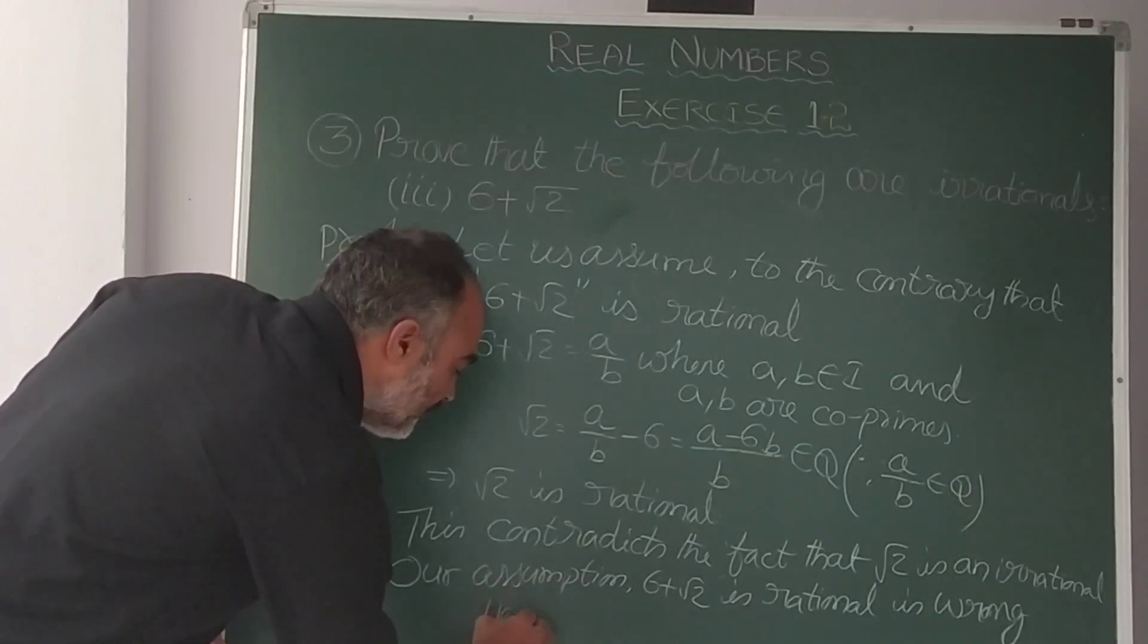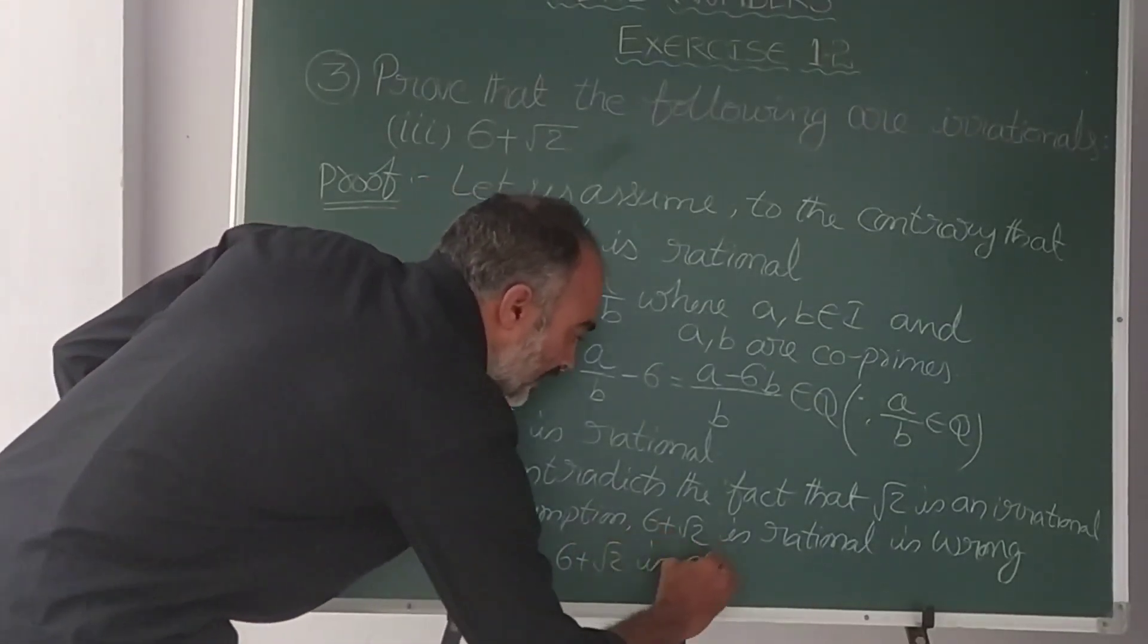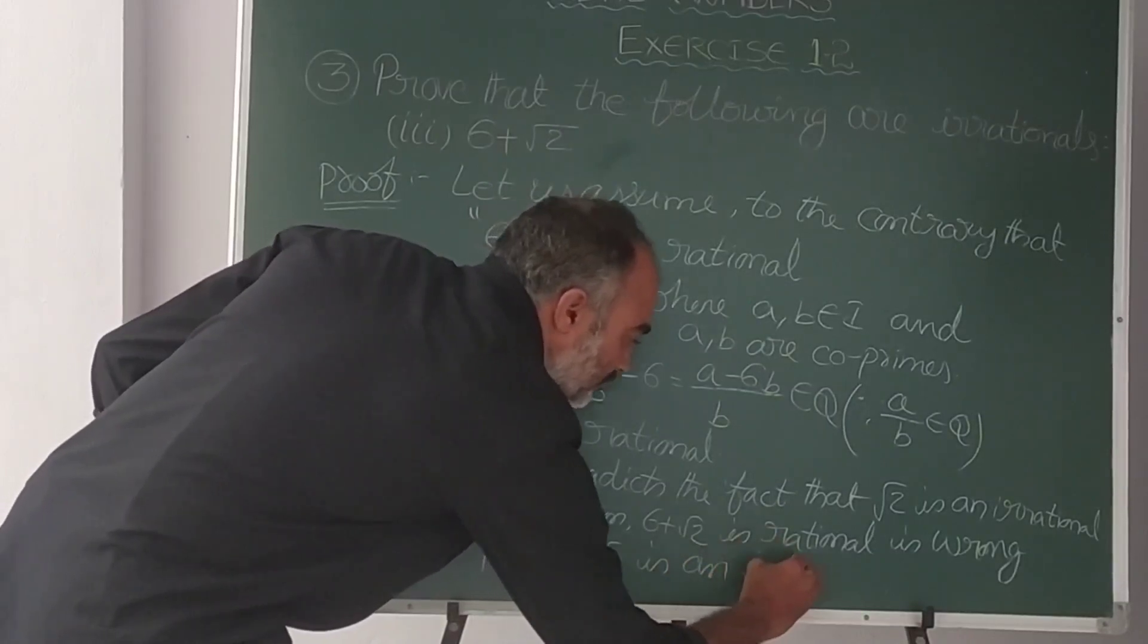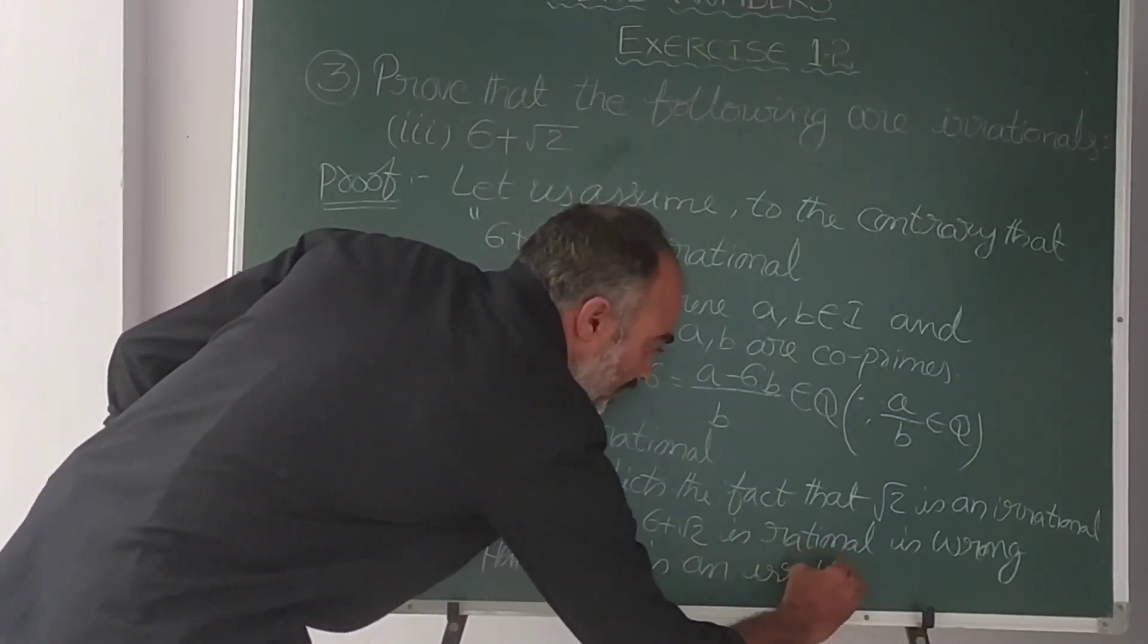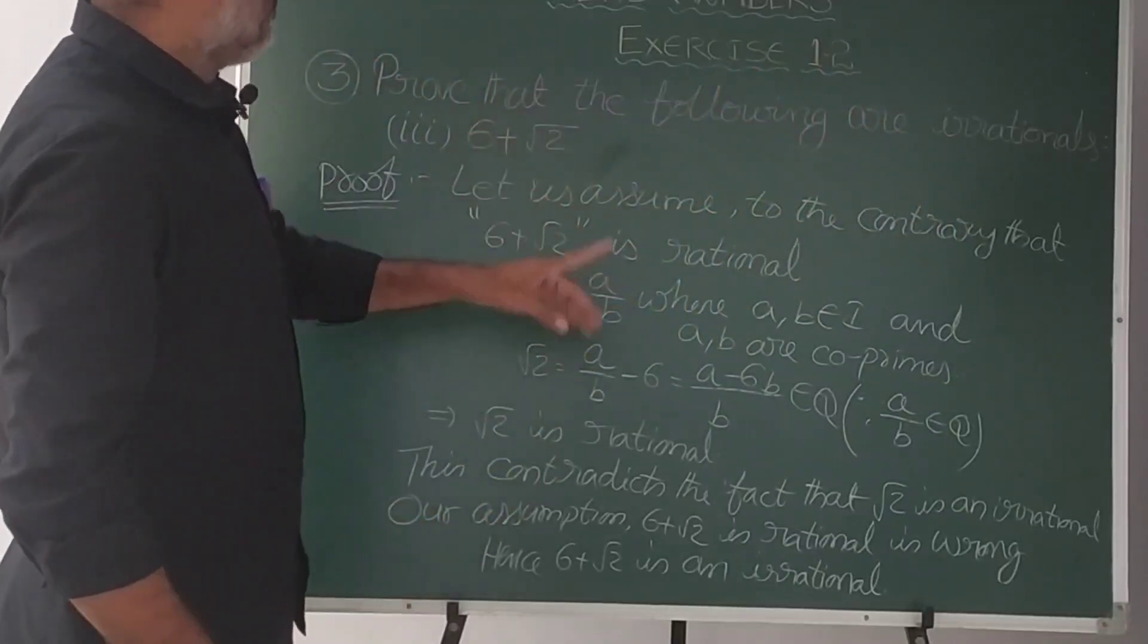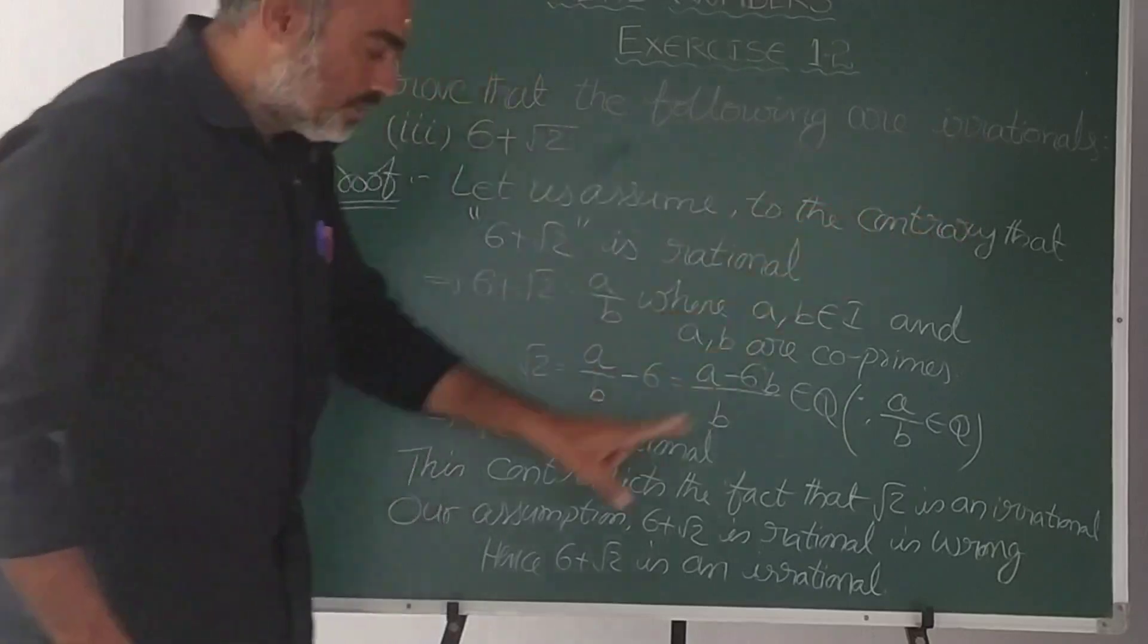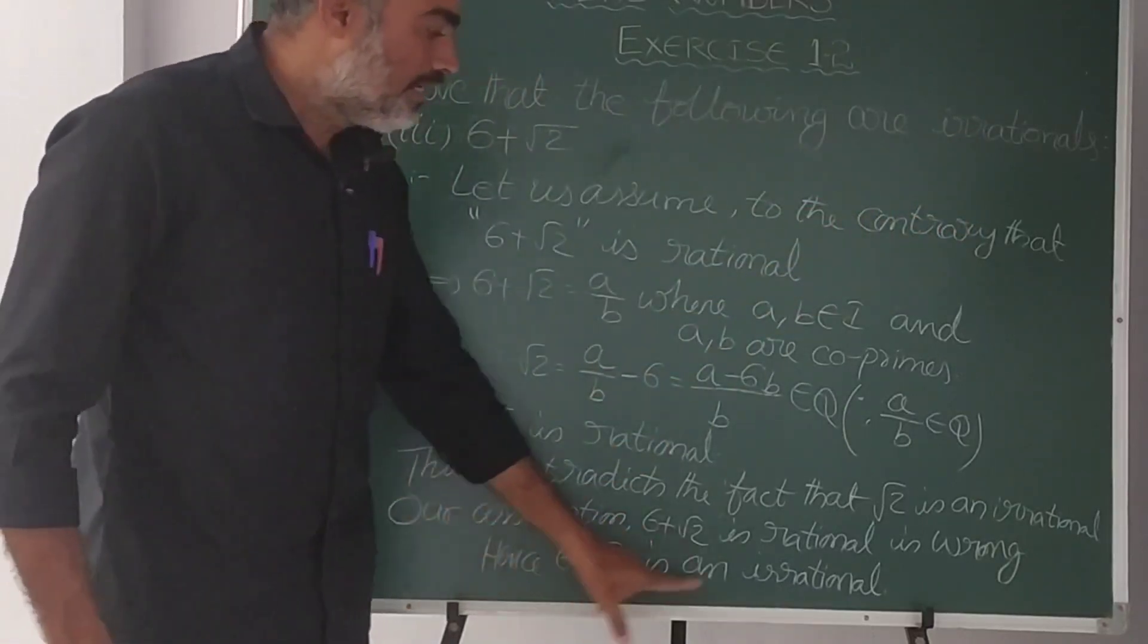Hence, 6 plus root 2 is irrational. What is the correct answer? Is an irrational. Final. Final question. Prove that 6 plus root 2 is irrational. Hence, 6 plus root 2 is irrational.